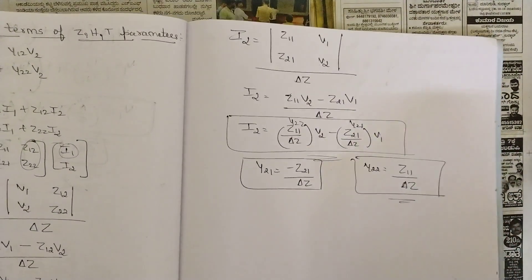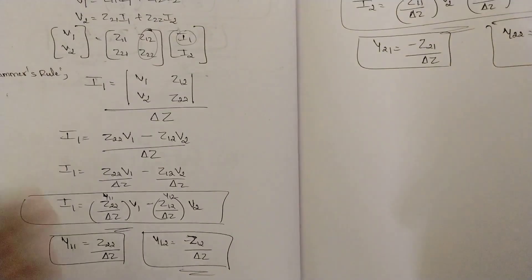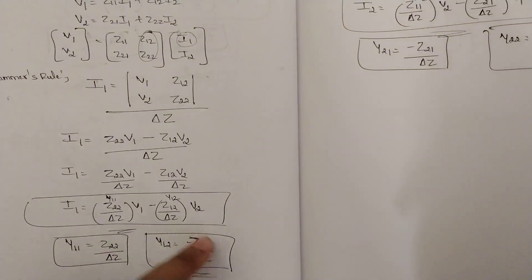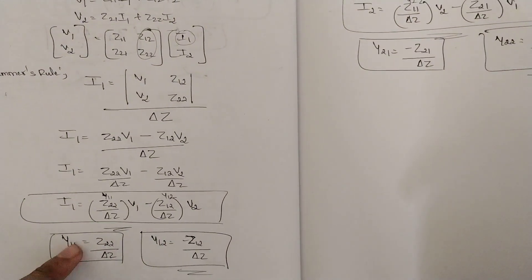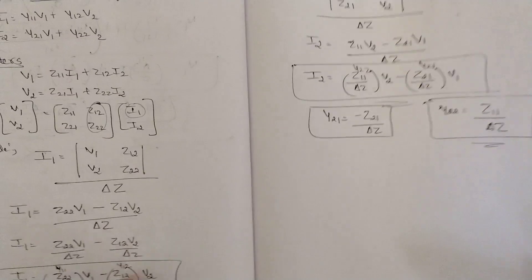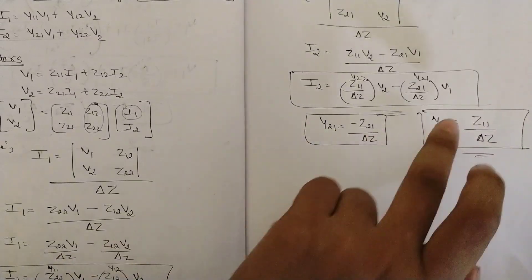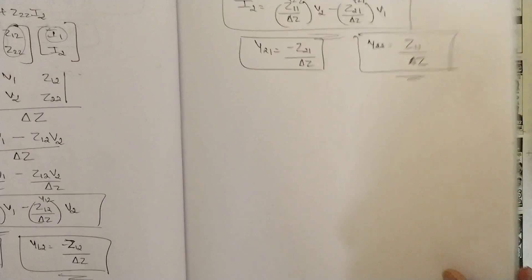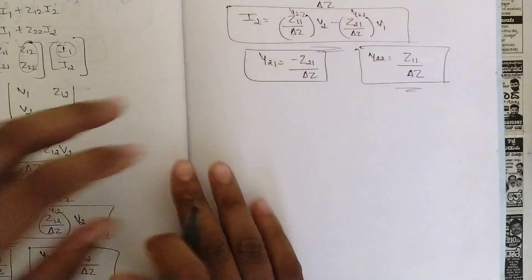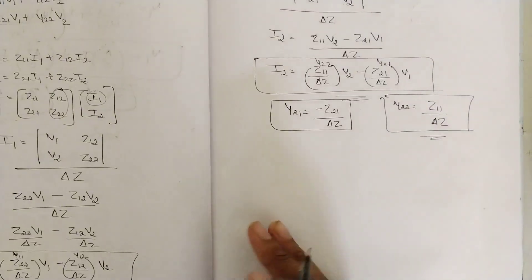So one combination is done. I have represented Y parameters in terms of Z parameters. All four values — Y11, Y12, Y21, Y22 — obtained by applying Crammer's rule.